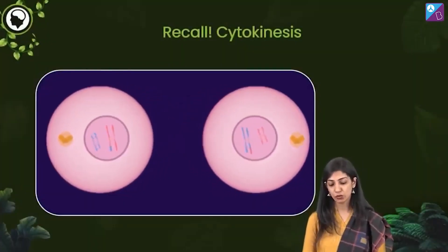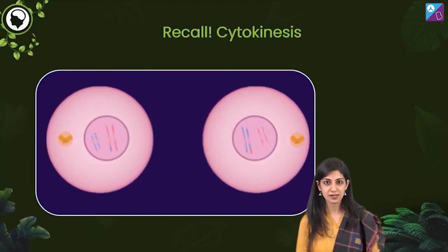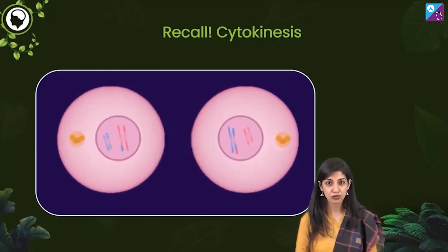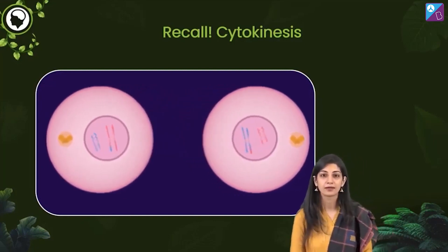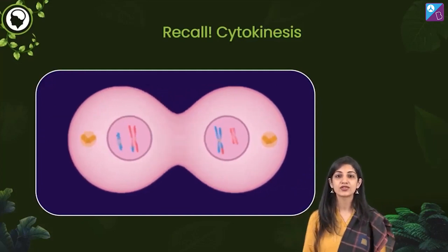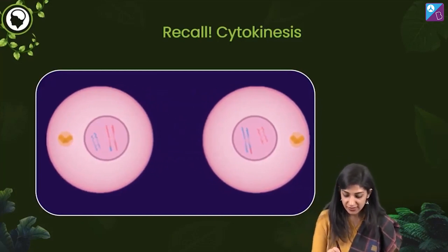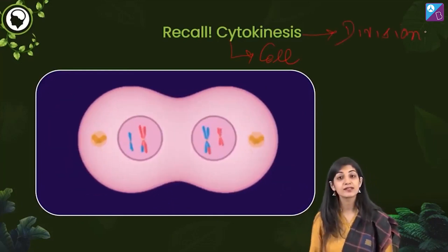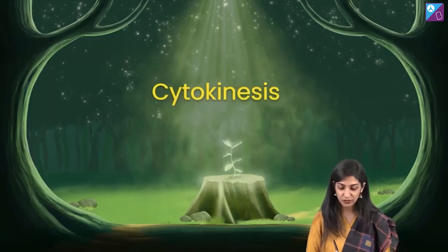You all know this — you've been studying it from junior classes and done it in 11th class. This is cytokinesis happening during cell division. We have karyokinesis, and after that the daughter cells detach or separate — that is called cytokinesis. 'Cyto' means cell, 'kinesis' means division; 'karyo' means nucleus, so karyokinesis is nuclear division. Now, cytokinesis is the division of the cell.